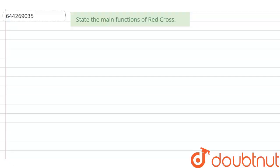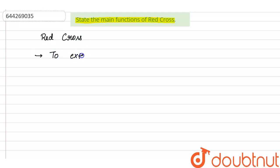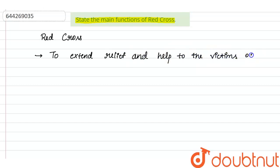Hello everyone. Today we are going to see the following question: State the main functions of Red Cross. Red Cross is a special group or organization formed to extend relief and help to the victims of any calamity.